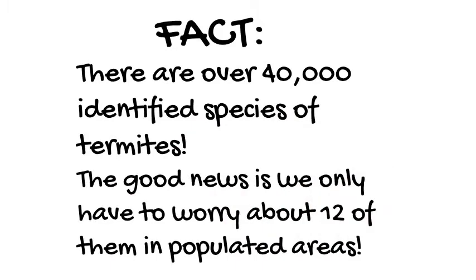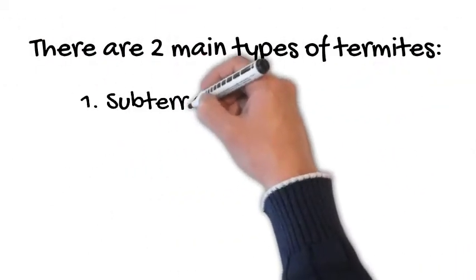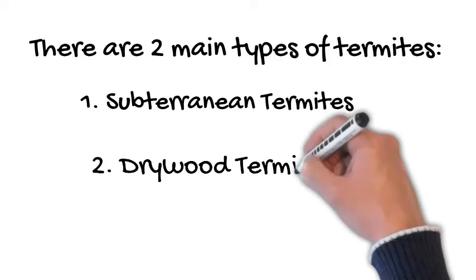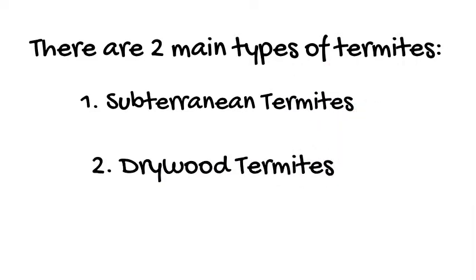There are over 40,000 identified species of termites, and the good news is we only have to worry about 12 of those in populated areas. And there are two main types of termites: subterranean termites and drywood termites.